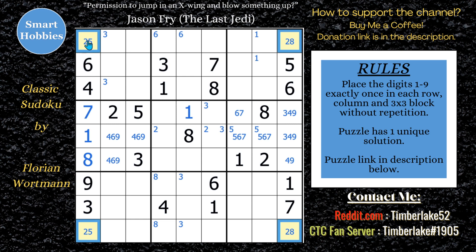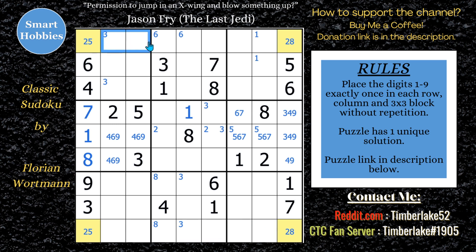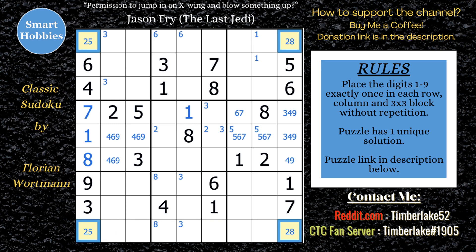I really like what Florian did here — you kind of have to look to the outside, and I exhausted everything with Snyder leading up to that point. Since the 2 can't be across here, the 2 is now limited to 2 spots in block 2, making it a pointing pair. The 2s can't be here and can't be here, so we can solve this cell for a 2.